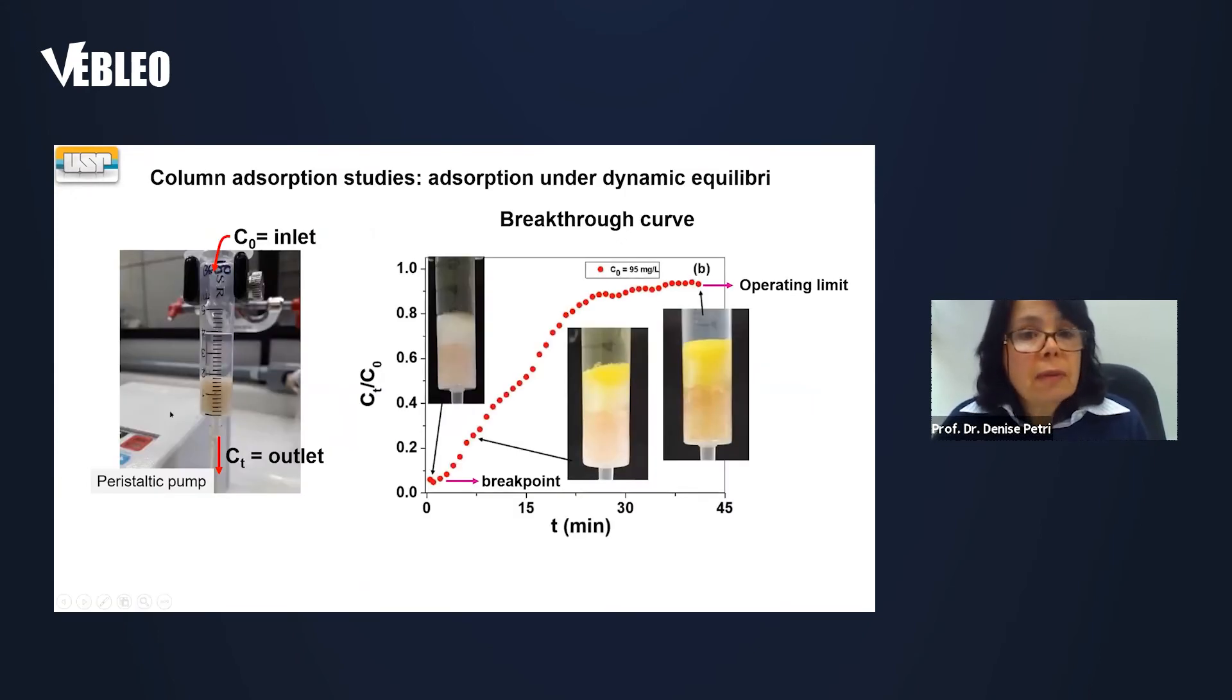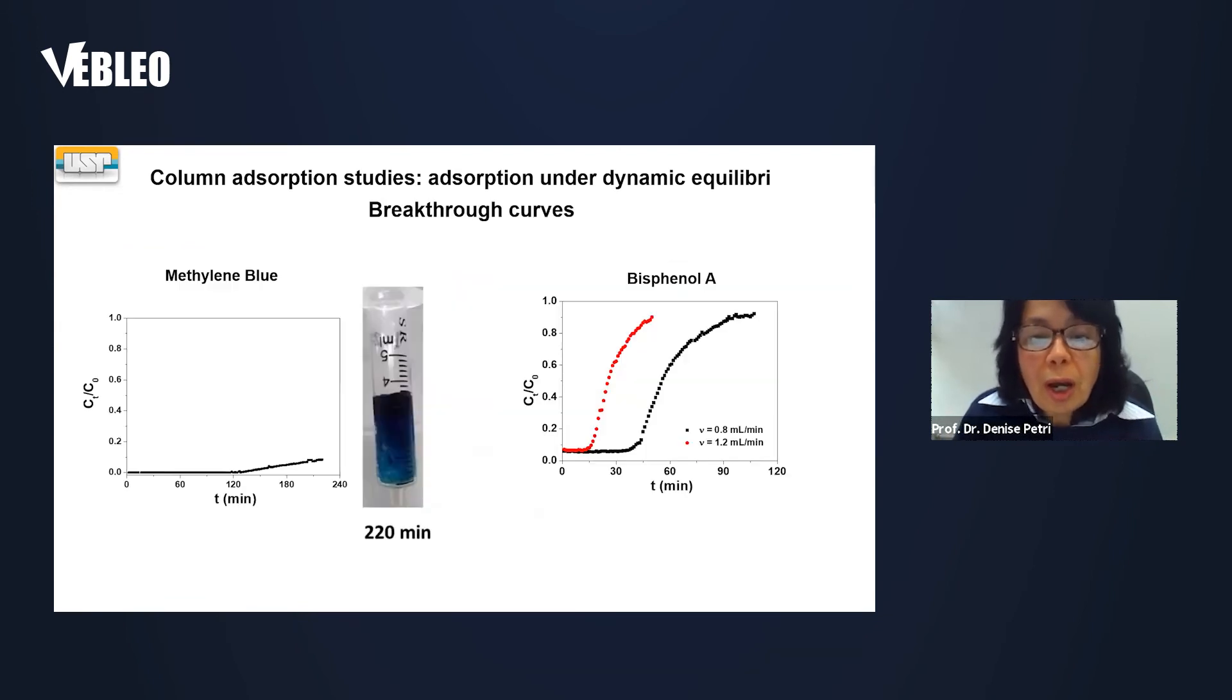We made some columns and here we have the inlet and the outlet. The column is connected to a peristaltic pump. And here we have the breakthrough curve that showed that at the beginning, we have the absorbent. After 10 minutes, in this case it's chromate, we see that chromate accumulates at the surface at the top of the column. And then with time, it advances towards the end of the column. At the saturation of the column, where we have the operating limit of the column, we have almost everything yellow.